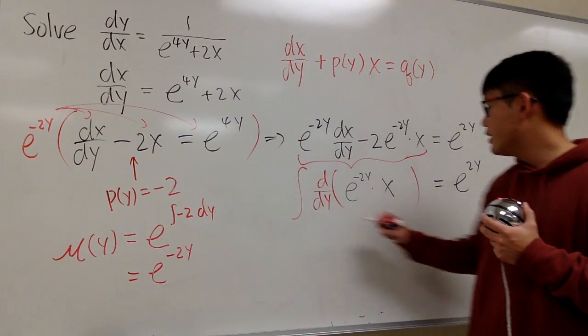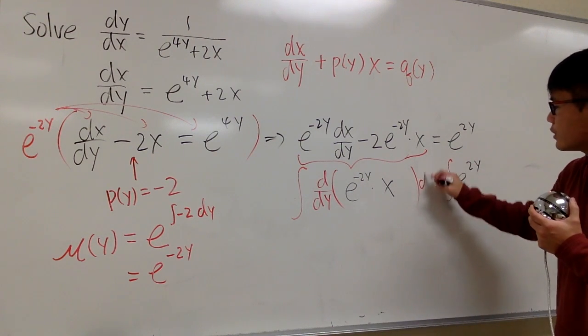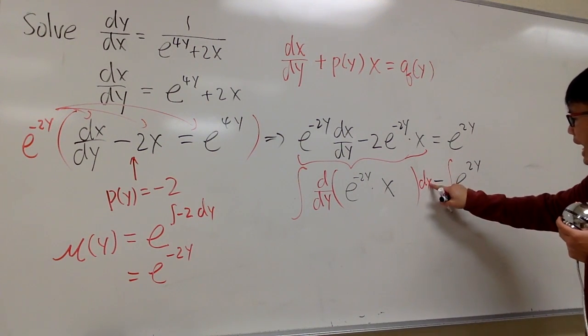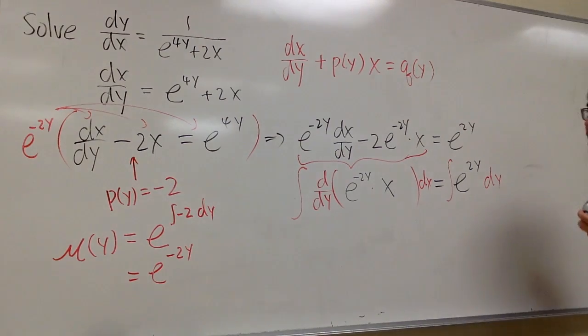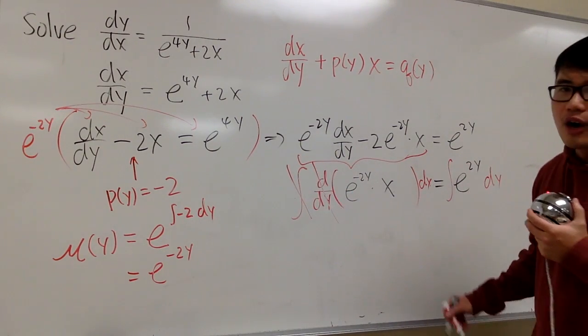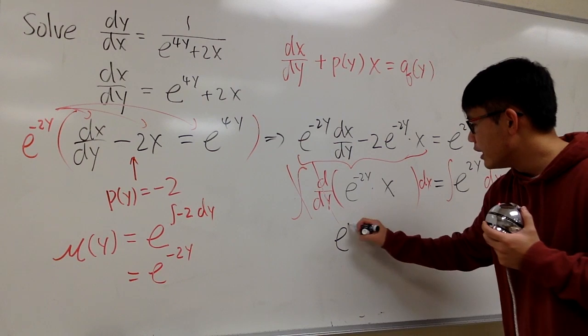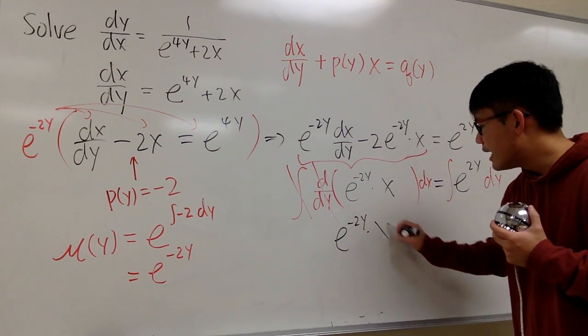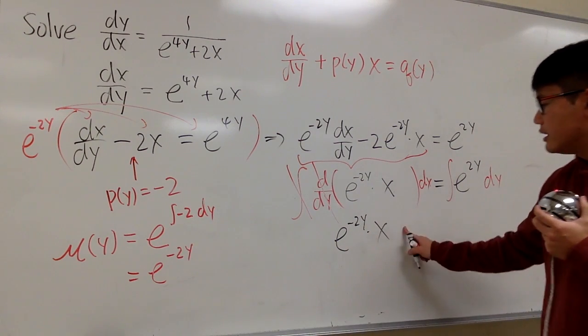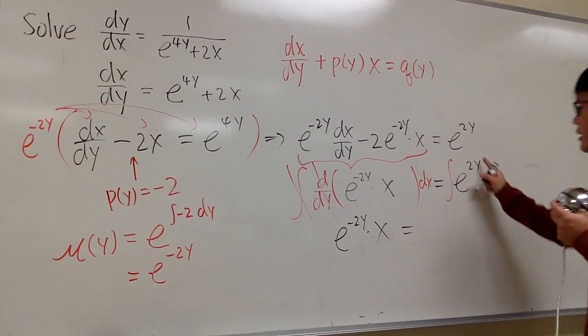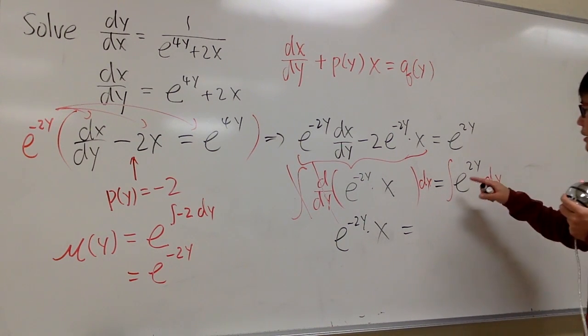So integrate, integrate. This time is with respect to y. So let's put that down. Here, this will not cancel. We will just have e^(-2y) times x, and don't worry about the plus c, because I'm going to integrate this, and put the plus c right here.